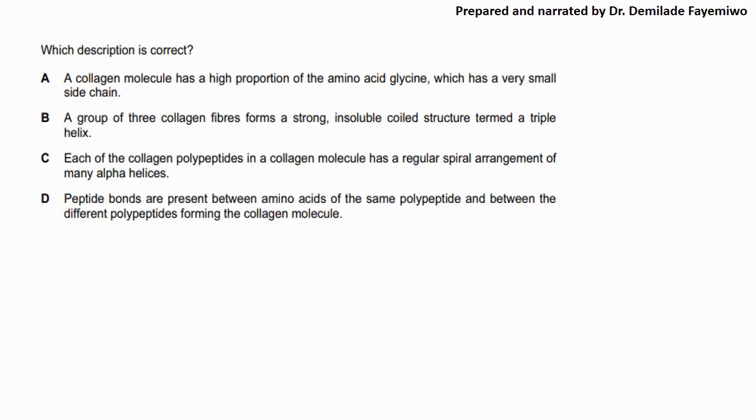This is another question. Which description is correct? A collagen molecule has a high proportion of amino acid glycine which has a very small side chain. A group of three collagen fibers forms a strong insoluble coiled structure termed a triple helix. Each of the collagen polypeptides in a collagen molecule has a regular spiral arrangement of many alpha helices. Peptide bonds are present between amino acids of the same polypeptide and between the different polypeptides forming the collagen molecule. So which one of these do you think is correct?